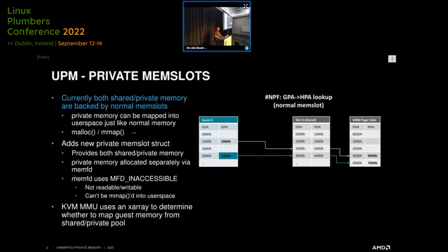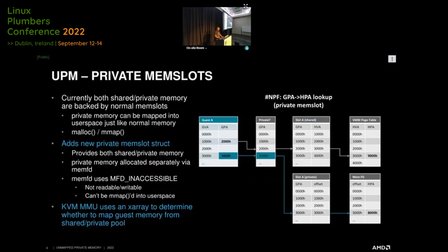Here's how things look with the private memslot implementation. For the shared page 2000H, the lookup is handled the exact same way. But in the case of the private page 3000H, when the KVM MMU is handling the nested page fault, it'll see in the X-array that GPA 3000H is backed by private memory. In that case, instead of doing the normal lookup, it'll use the GPA to find the index in the special memFD backend to get the host physical address to program into the nested page table.